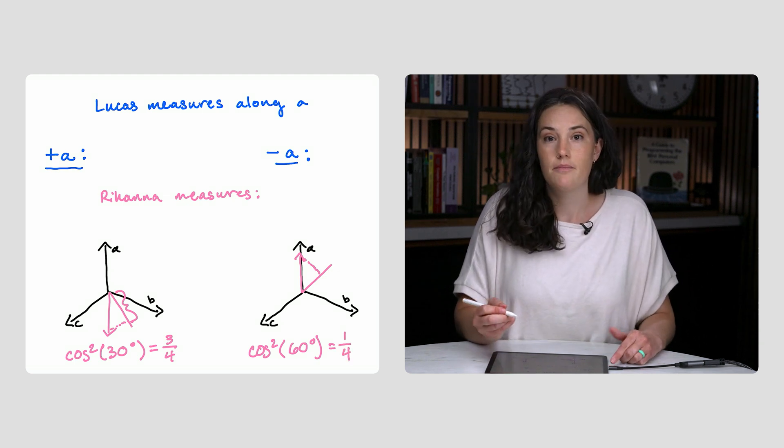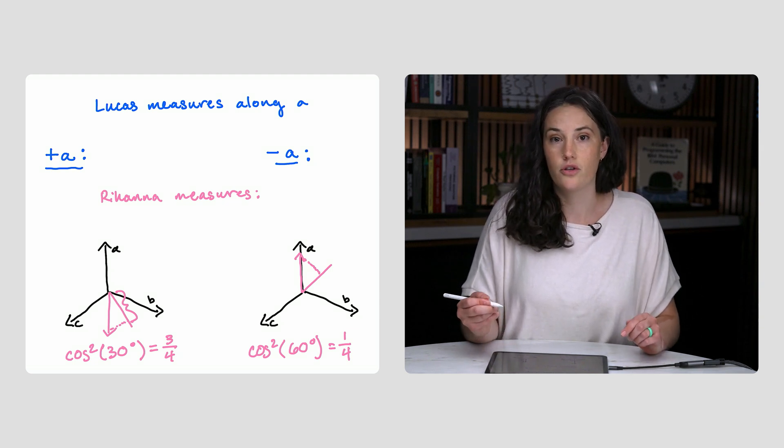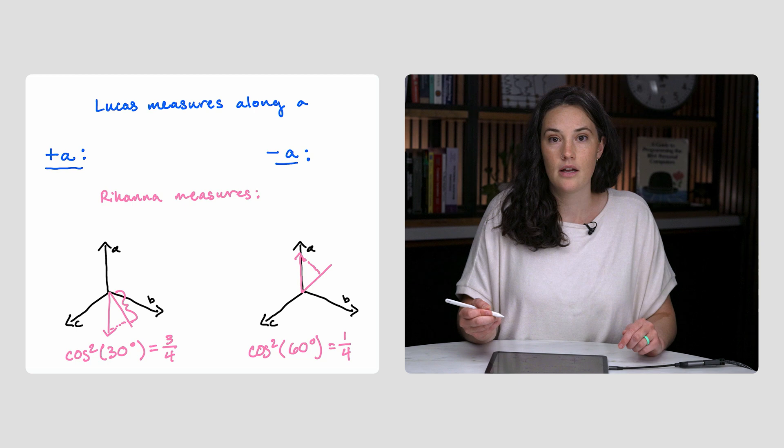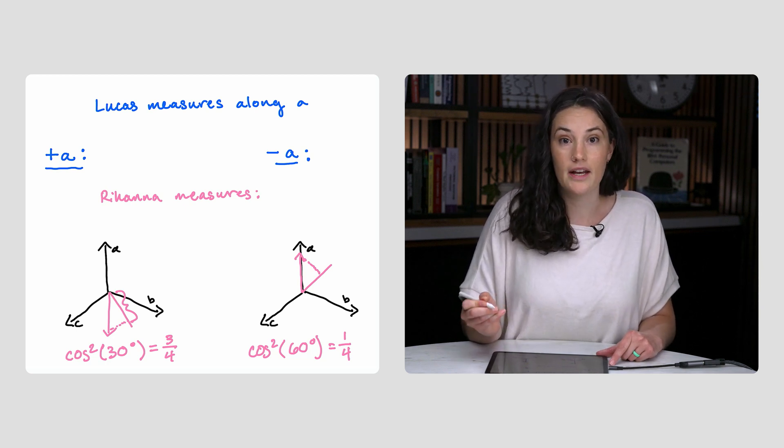Since Lucas is equally likely to measure spin up and spin down along A, we need to average these two probabilities of Rihanna's. We end up with a final probability that Rihanna will measure the same sign as Lucas of 1 half.